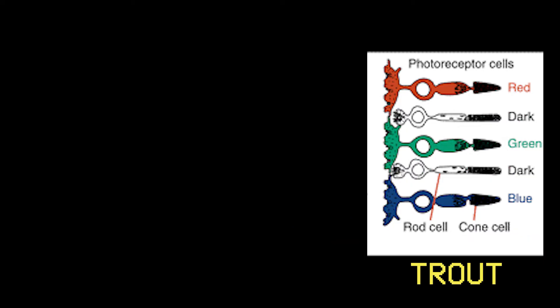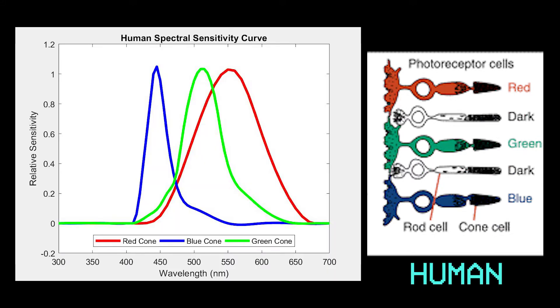The cones react strongly to different wavelengths of light, which correspond to different colors within the light spectrum. Here is an image showing the approximate peaks and sensitivity of each of the three cones within a human eye. Notice that the peak for red is around 565 nanometers, green 535, and blue 440.